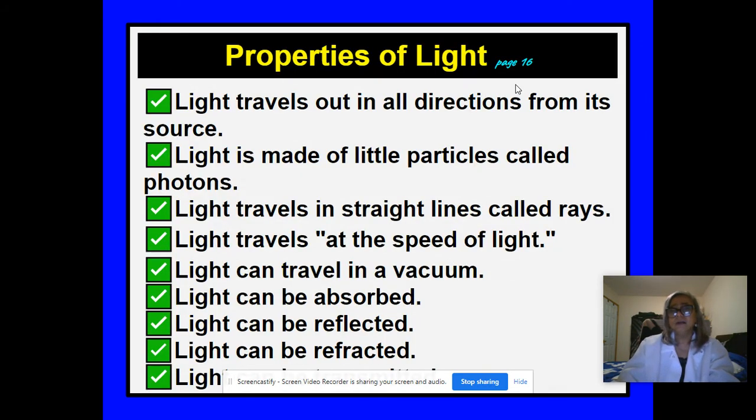Now, once you have the booklet on page 16, there is an interesting reading passage on the properties of light. I just summarize everything here. It says here, light travels out in all directions from its source. Light is made of little particles called photons. Light travels in straight lines called rays. Light travels at the speed of light. Light can travel in a vacuum, meaning empty space. Light can be absorbed. Light can be reflected. Light can be refracted. This one that you cannot see, this is light can be transmitted.